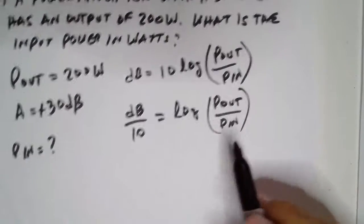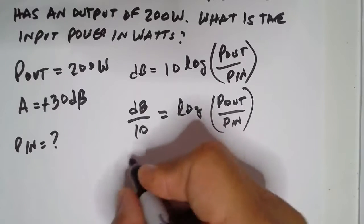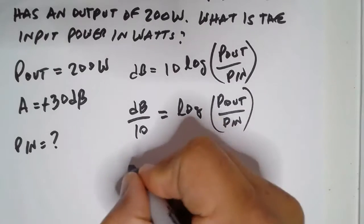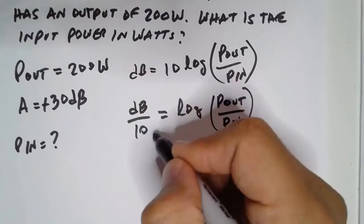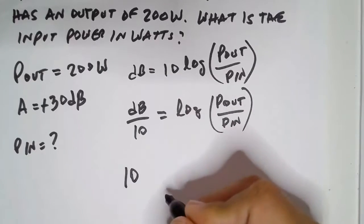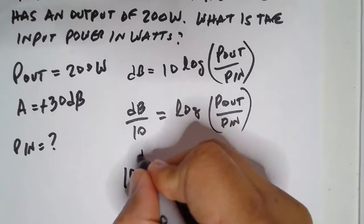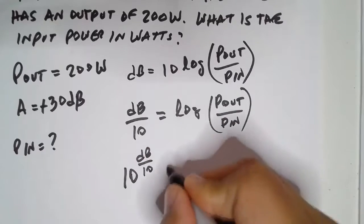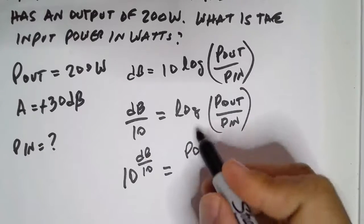Now we take the anti-log of both sides, and that will turn this into the exponent of a base 10 element. Here, the anti-log will cancel the log.